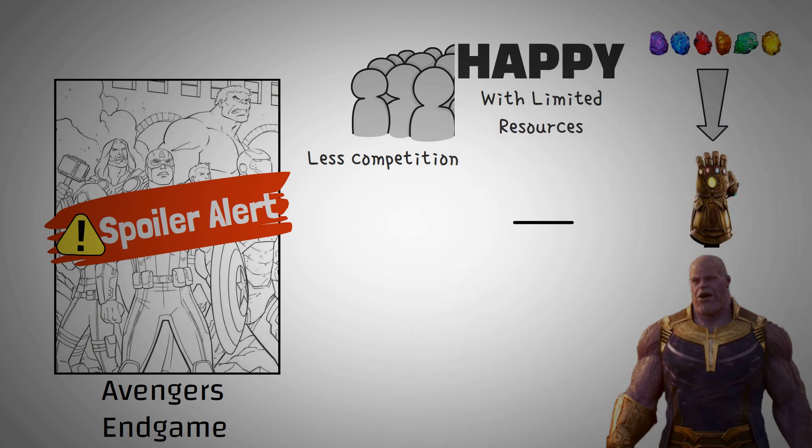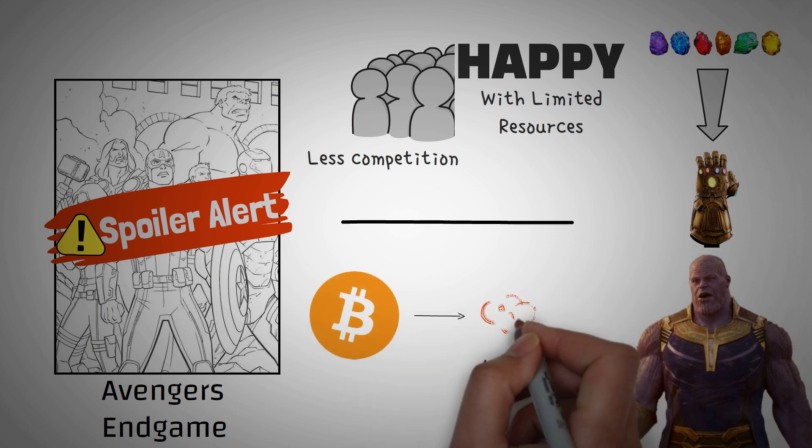He believed there was overpopulation and that it was a big problem. Similarly, around every four years, a certain metric in Bitcoin is cut in half. Now, you don't have to be a genius to know that if we look forward in the future, there will eventually be a time where that metric is close to zero.